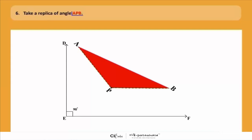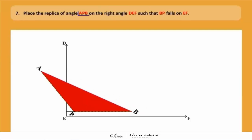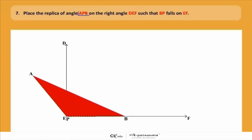Now what do we have to do next? Now you have to place the replica of angle APB on the right angle DEF such that BP falls on EF.